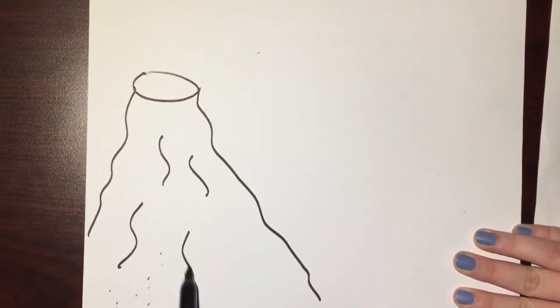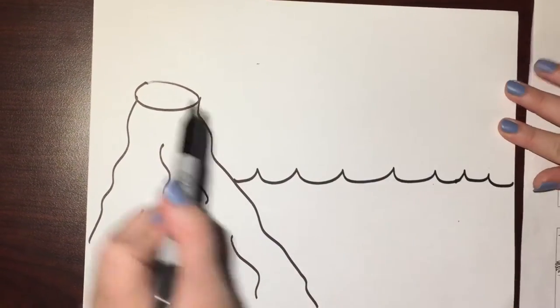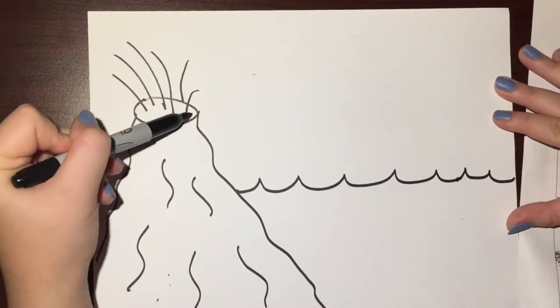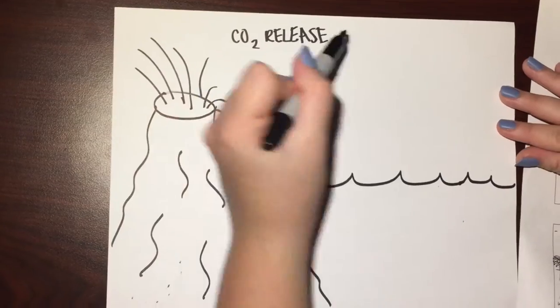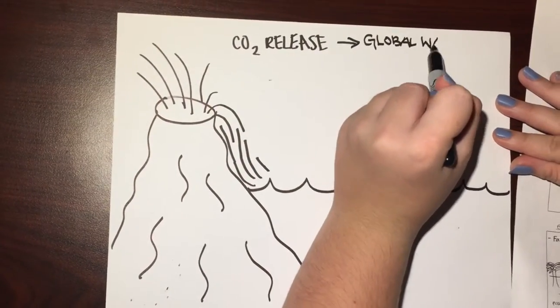Scientists believe that the end Permian extinction began with a series of volcanic eruptions that released massive amounts of carbon dioxide, which caused a change in ocean chemistry. As the waters got warmer, oxygen was released leaving behind hydrogen sulfide.